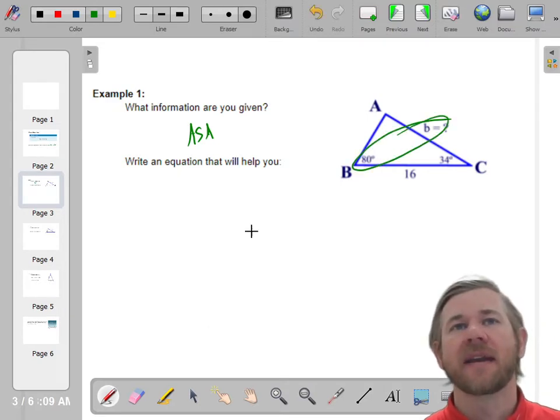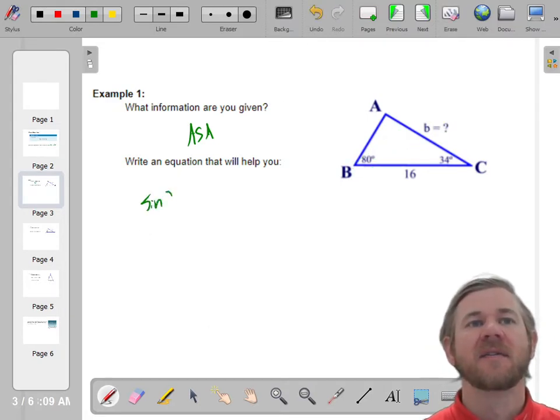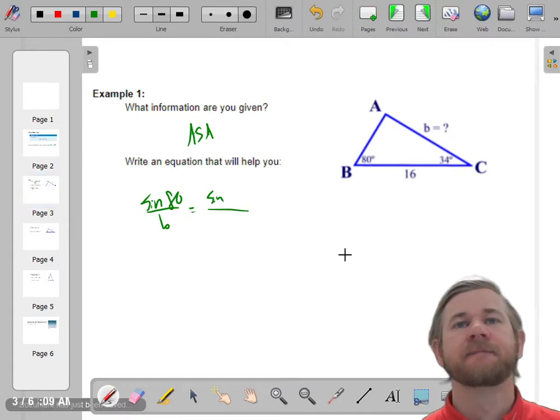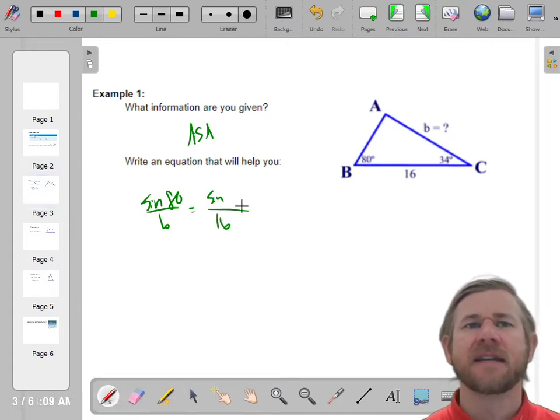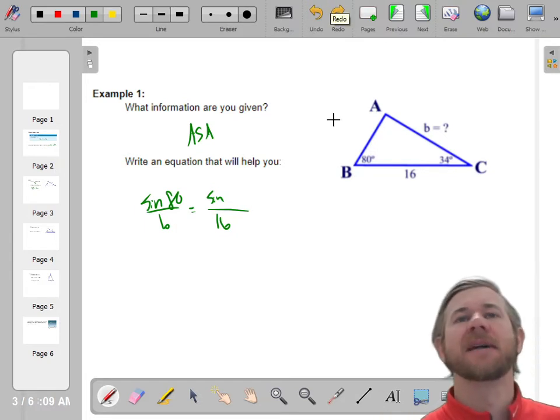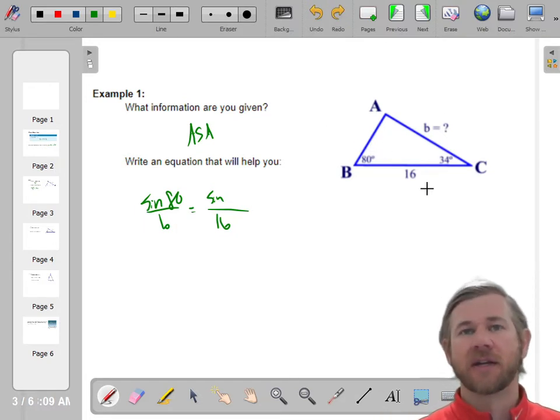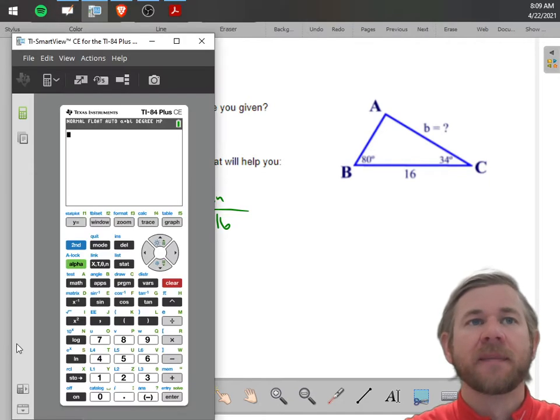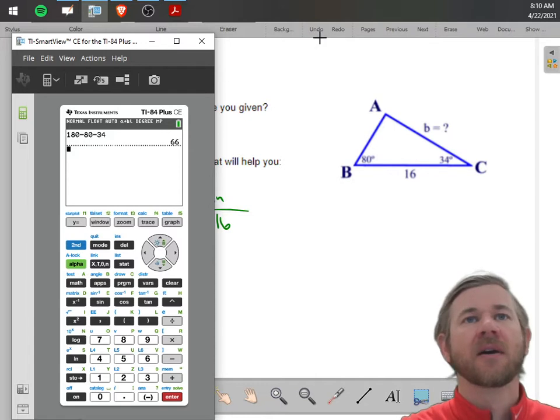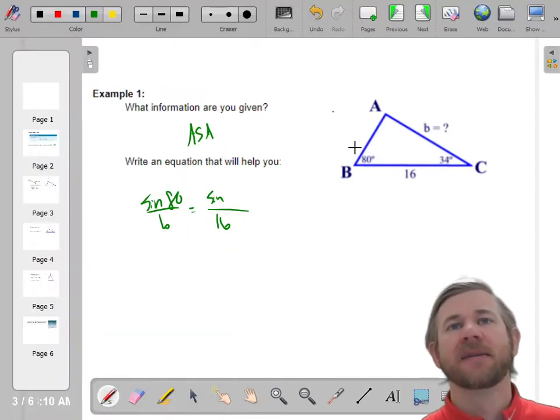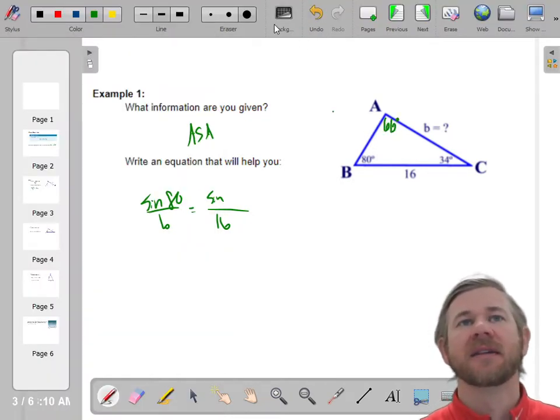We are looking for that. So I know I'm going to say something like the sine of 80 over I'll just say little b equals the sine of, well, I know this side is 16. But how am I going to find that angle? The cool thing about knowing two angles in a right triangle or in a triangle is you actually know all three because you know that they have to add up to 180. So if I do 180 minus 80 minus 34 using some geometry rules, I can just say, well, first thing, this has to be 66 because the angles add up to 180.